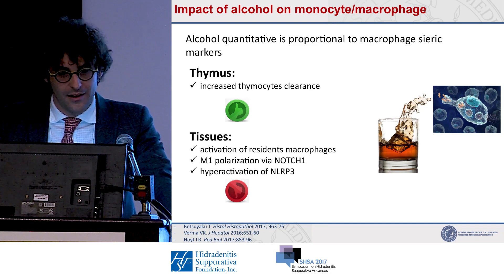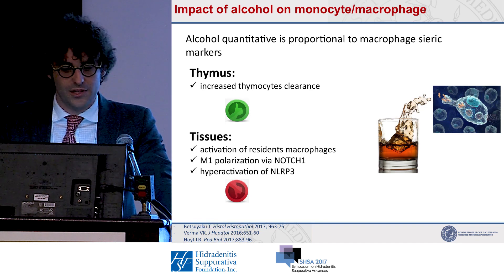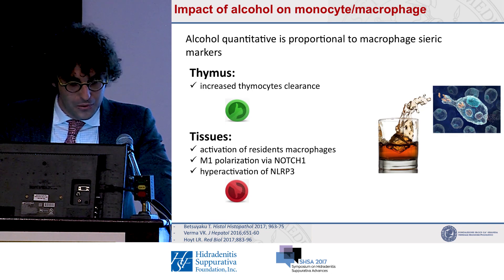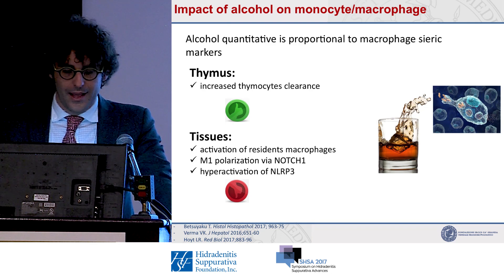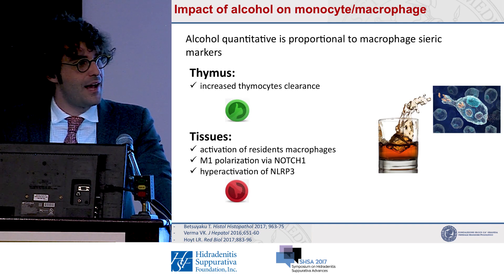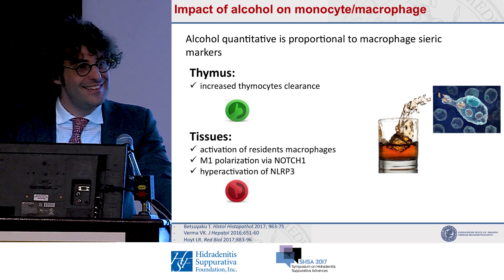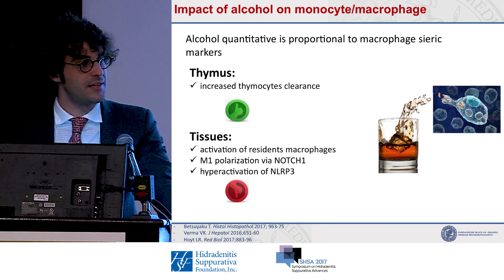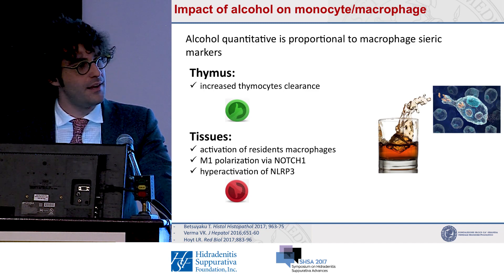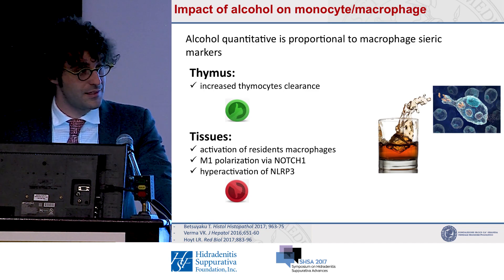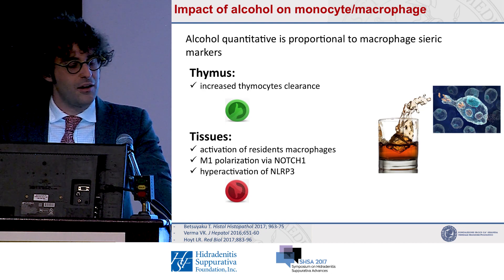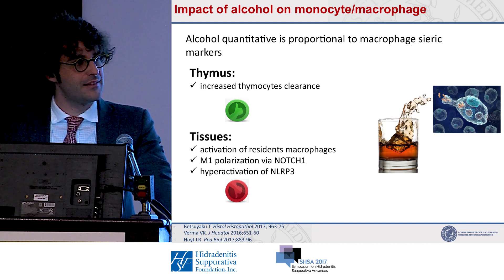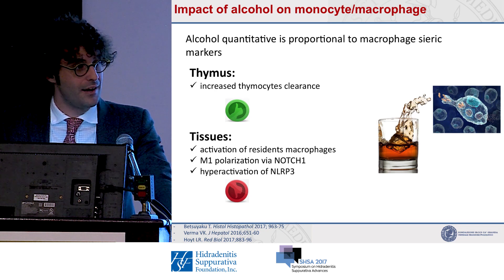Going deeper into the thymus, alcohol use has been demonstrated this year by Bizzu Yaku to increase the clearance of apoptotic thymocytes, thereby decreasing the possibility for self-antigens to be presented and so decreasing the possibility of developing an autoimmune disease. But on the tissue, on resident macrophages, alcohol specifically increases activation by increasing M1 polarization via Notch-1.